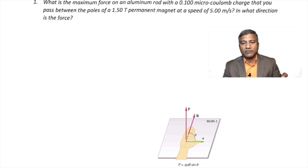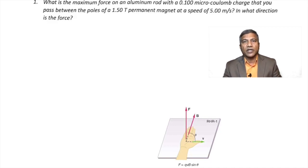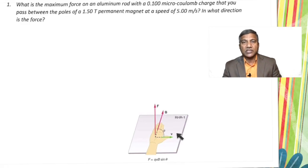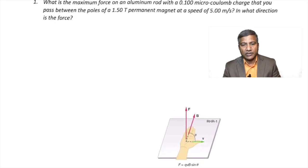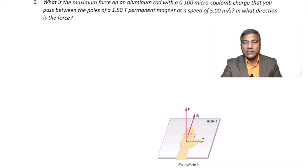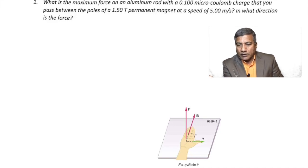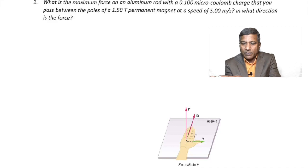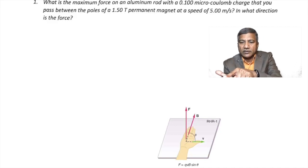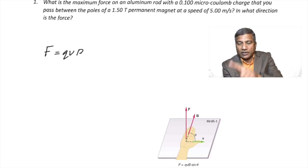We have the charge, the strength of the magnetic field, and the speed. We are asked to find the force and its direction. The direction of the force is given by the right-hand rule: if the thumb gives the direction of velocity and the fingers give the direction of the magnetic field, then the palm gives the direction of the force.